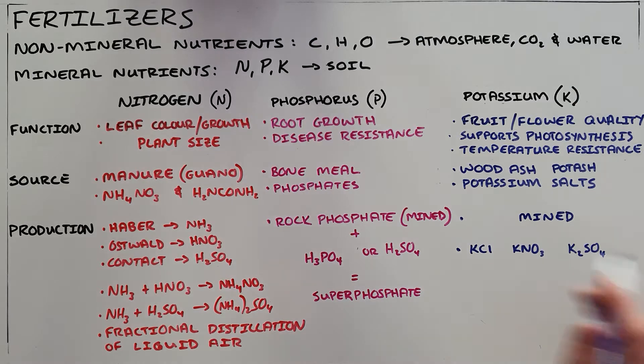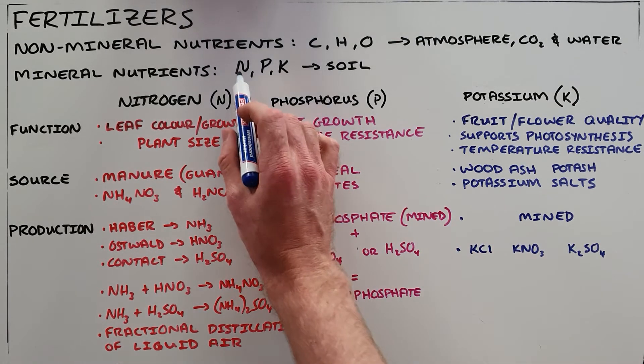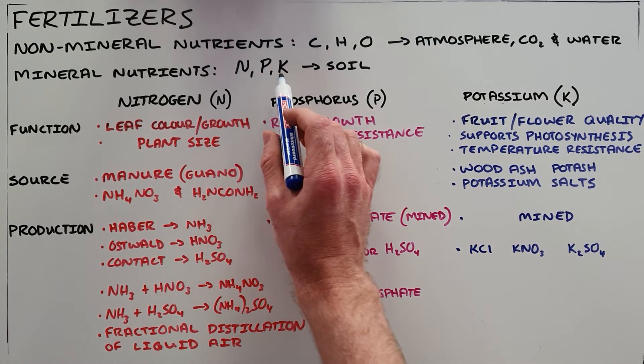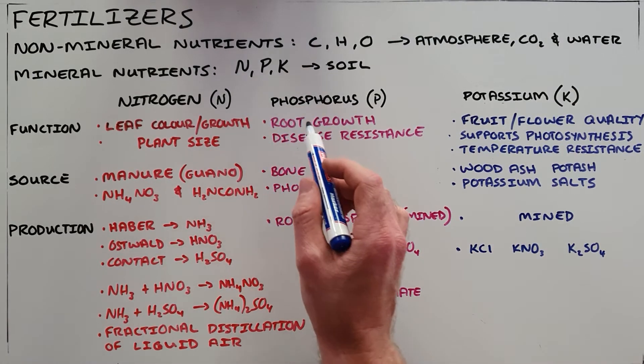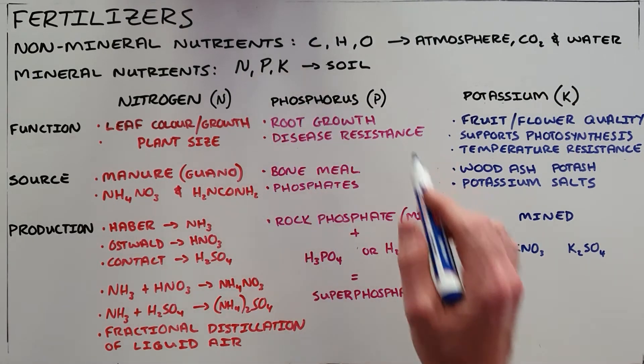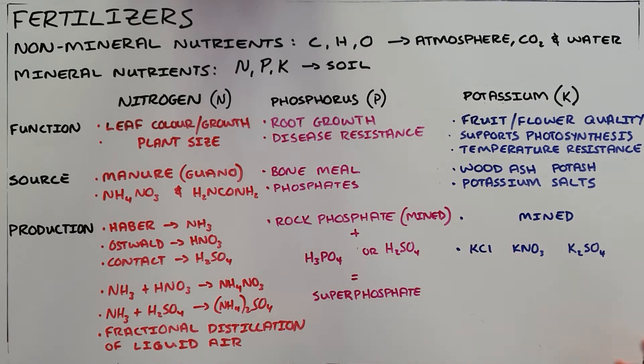The mineral nutrients — nitrogen, phosphorus and potassium — are obtained from the soil and then obviously from fertilisers.